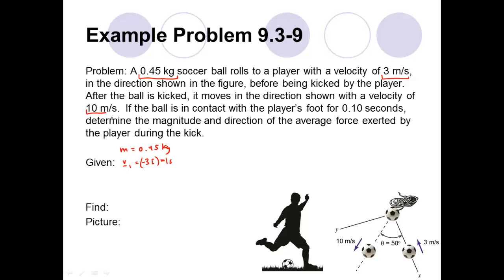We're also told the velocity of the ball after it is kicked — 10 meters per second, where theta is 50 degrees. We can break that vector into an x component and a y component. The x component is adjacent to the 50-degree angle: 10 cosine 50 degrees in the positive i direction. The y component is opposite the 50-degree angle, so we use sine: 10 sine 50 degrees in the positive j direction, with units of meters per second.